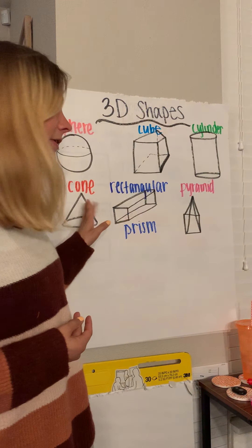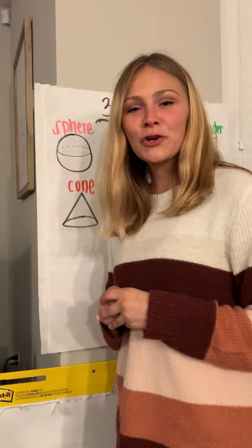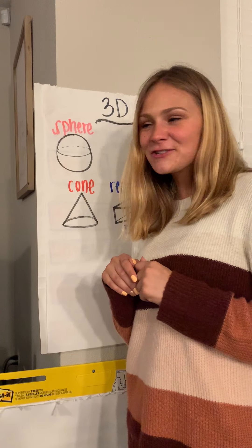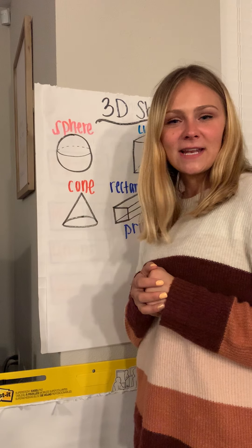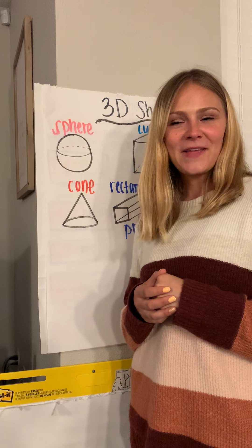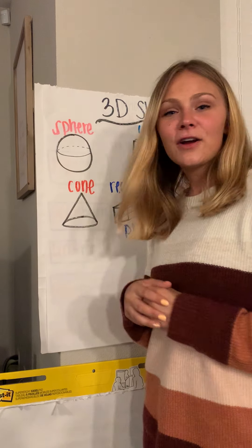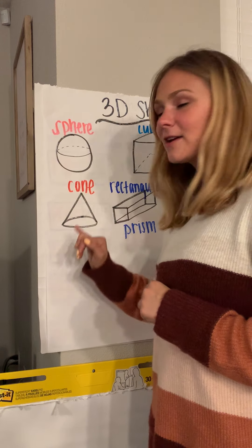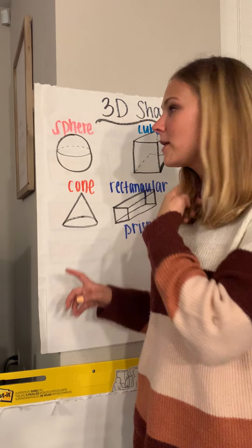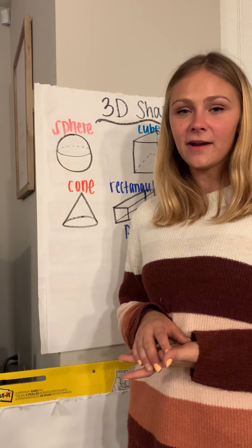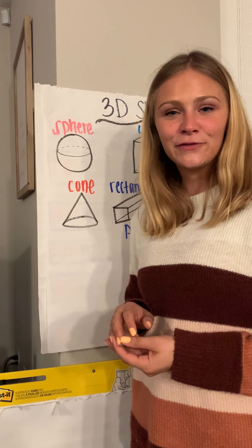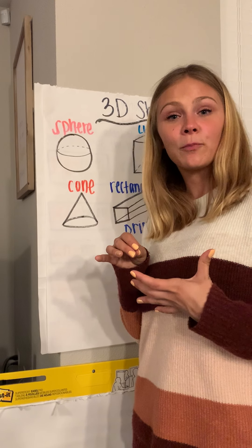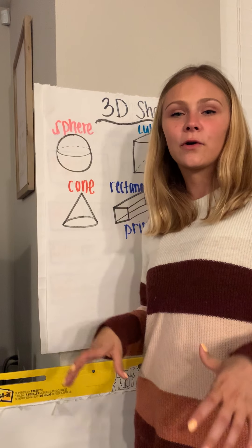Our next 3D shape is called a cone. I'm sure by looking at it you can already say it looks like an ice cream cone — it sure does. That is just an ice cream cone turned upside down. It has a circle on the bottom and kind of looks like a triangle up top, but we know those are 2D shapes. Put them together and it makes a cone. Or if you've ever seen those big orange cones outside on the street or in a school parking lot — those are also cones.